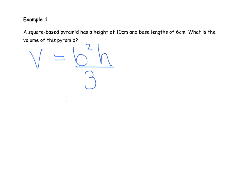Volume equals B squared H divided by 3. Just reading the example, we see that the height is 10, so we can substitute 10 in for height, and we see that the base lengths are 6. So we get 6 squared times 10 divided by 3.